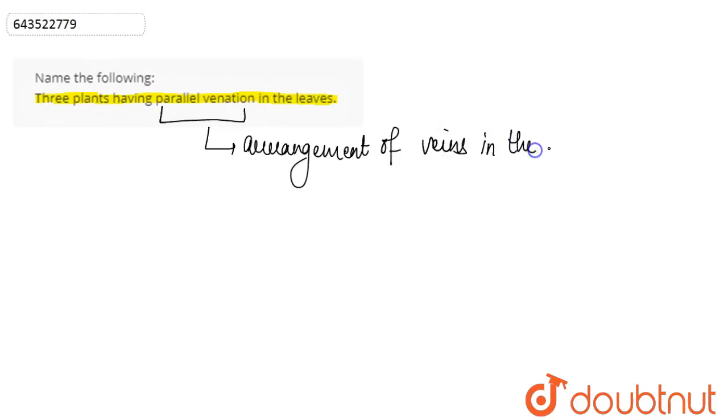In the case of parallel venation, the veins are basically arranged parallelly. The parallel arrangement of veins in the leaf is called parallel venation. Now let's consider